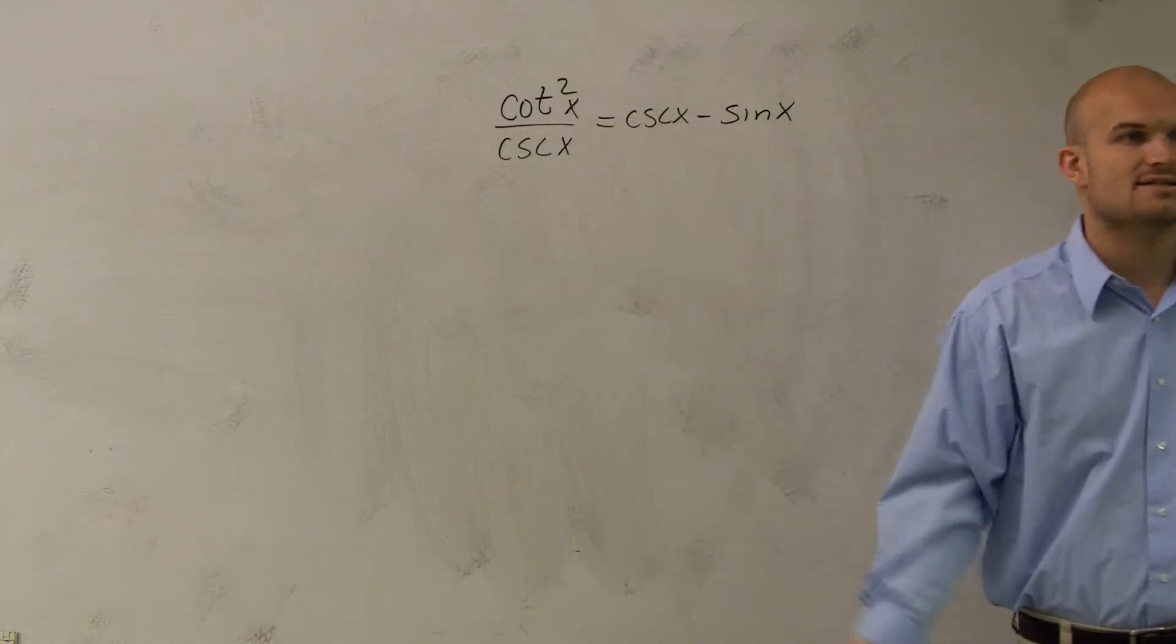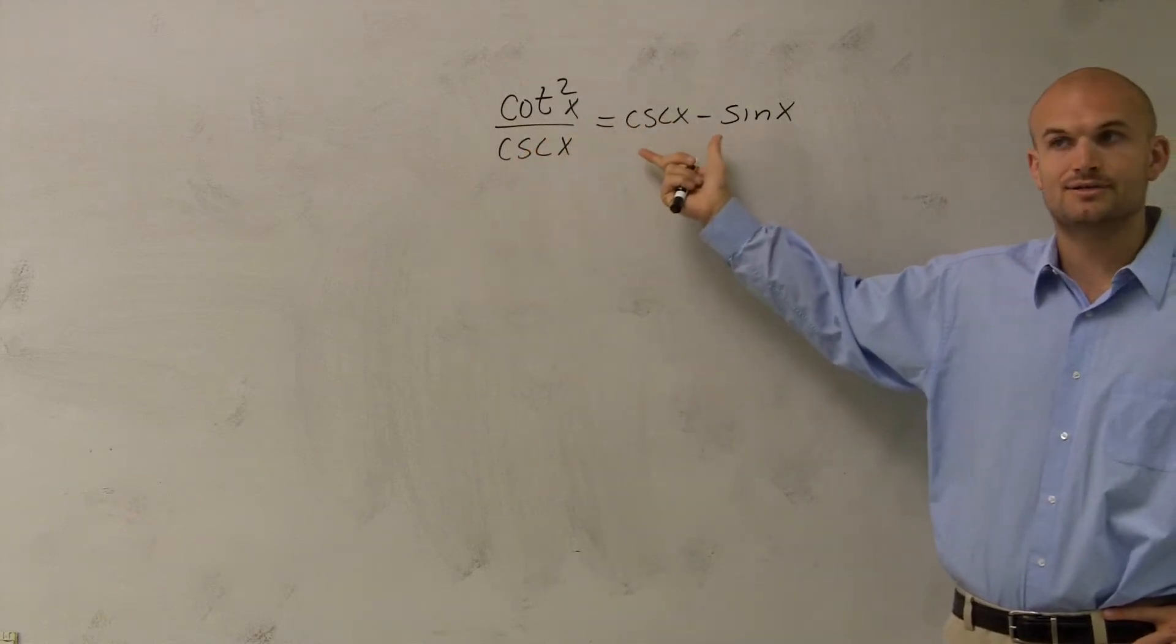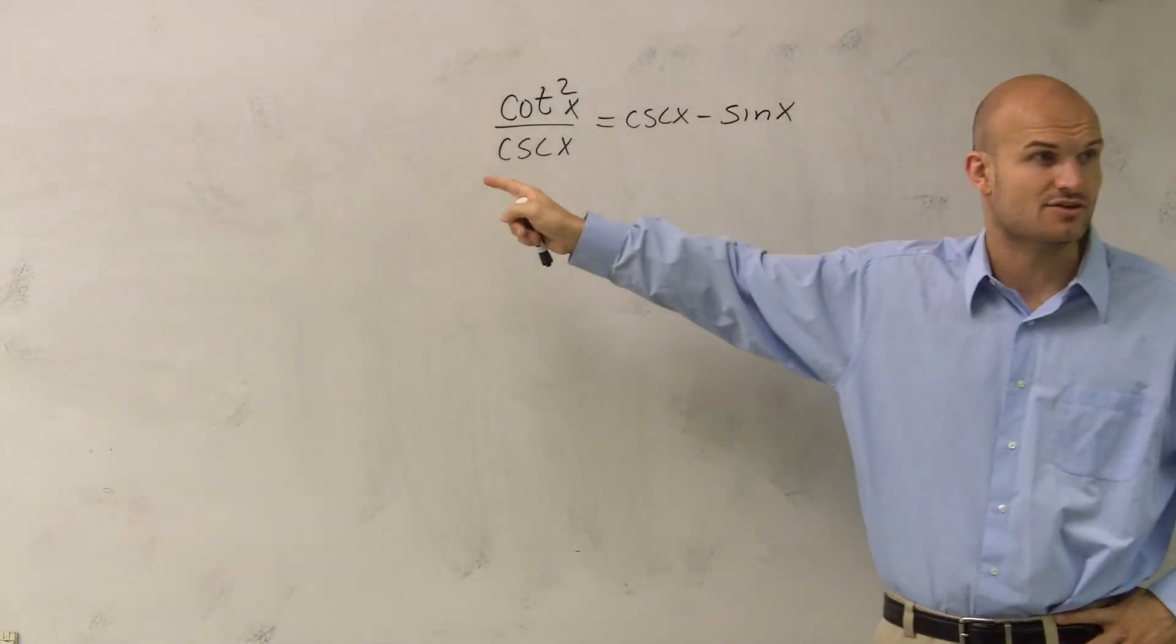Another way you can look at this is trying to get whatever's on your bottom. Because you notice here's a fraction, and here's two terms subtracted by each other. So I also need to somehow get rid of my fraction, right?